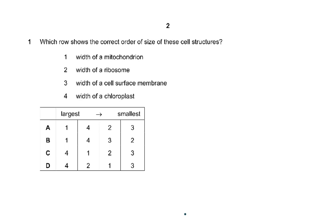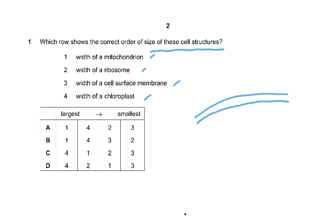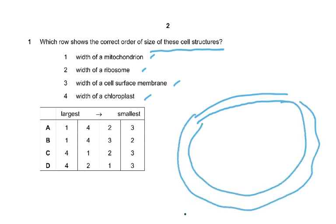Question one shows which row gives the correct order of size of these cell structures: width of a mitochondrion, width of a ribosome, width of a cell membrane, and width of a chloroplast. Unless you're very clear on these you'll get this wrong. The width of a cell membrane — this means the membrane of the cell — is about seven nanometers, so that is the smallest. First, get the units right.